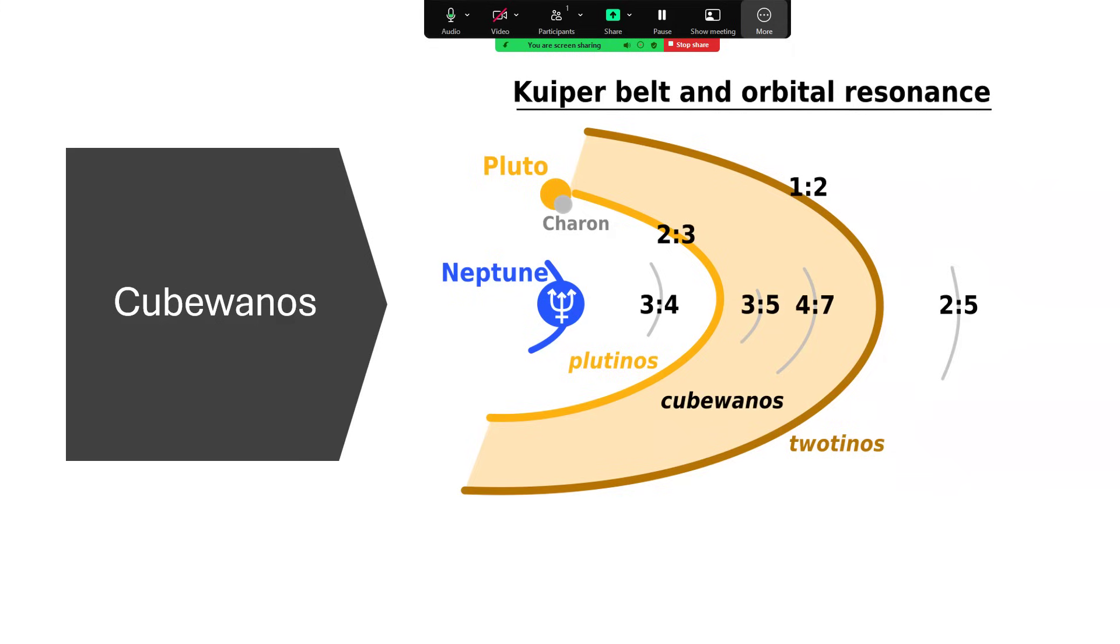I absolutely love that term. I think that's very creative. And there are some objects in two to one resonances, so those get called twotinos. Somebody really was quite creative with thinking all of this up.